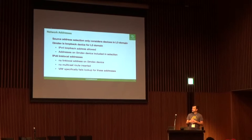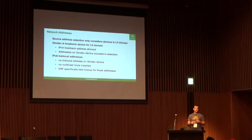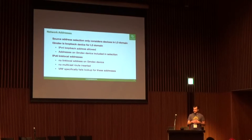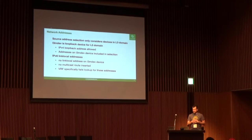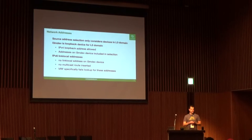From a network address perspective, only devices within that L3 domain are considered when doing address selection. When you do the route lookup, if the device itself has an address, that's the preferred one. Next it'll look at the L3 MDEV itself; if it has an address, that's preferred. Then it'll look at other interfaces associated with the L3 MDEV. The kernel does not put link-local addresses on an L3 MDEV device and does not insert multicast routes for those. The VRF driver will specifically fail any lookup for a link-local or multicast address on the device itself.